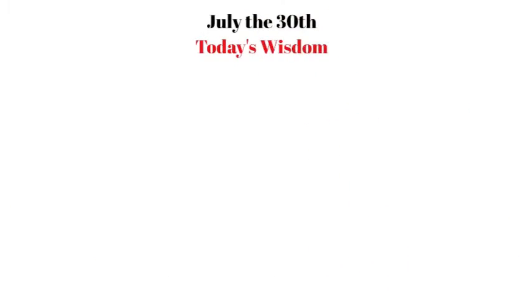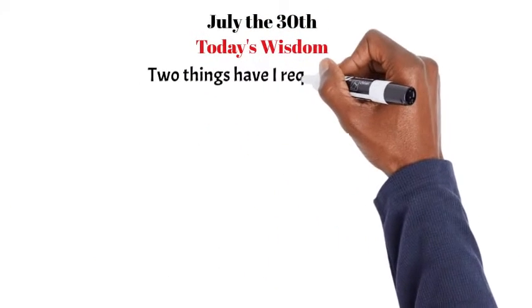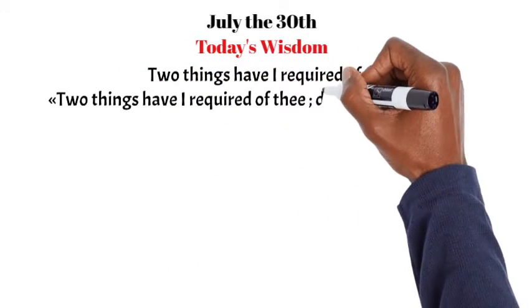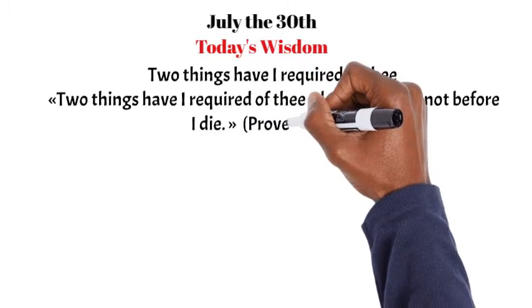July the 30th. Today's Wisdom: Two things have I required of thee, deny me them not before I die. Proverbs 30:7.